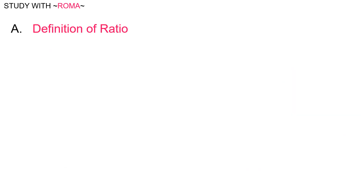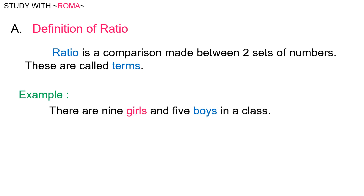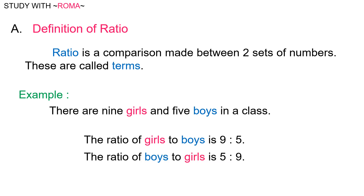Definition of ratio. Ratio is a comparison made between two sets of numbers. These are called terms. For example, there are nine girls and five boys in a class. The ratio of girls to boys is nine is to five. The ratio of boys to girls is five is to nine.